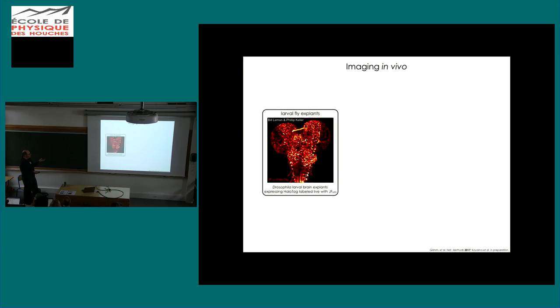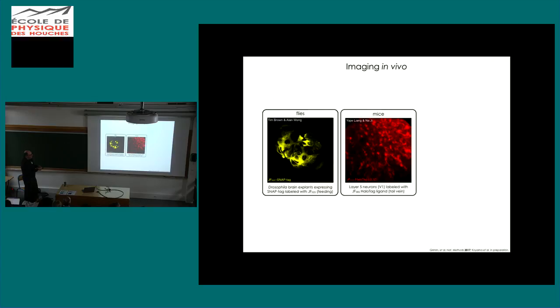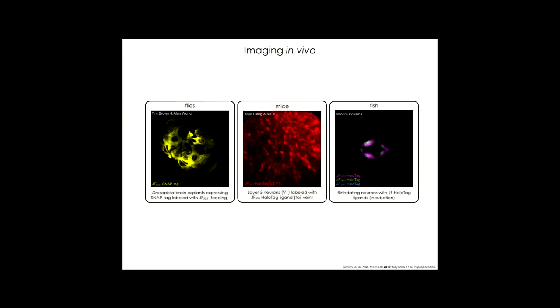One other question we've asked is, can we image in vivo? Here is a drosophila brain, larval brain explant expressing halo tag in these basin neurons. This is actually in vivo. This is feeding flies JF525 snap tag. It's able to reach the brain if you just put the dyes in the food. We can do this in mice where we can add JF585, either IP or IV crosses the BBB and gets to the brain. Fish are the easiest because you just let the fish swim in some water with the stuff and it gets in. Then you can just let the fish swim in some clear water for an hour and you're good to go. This is actually a pulse chase experiment where my colleague Manu Raghavan is pulsing during development and labeling different neurons according to their birthday.